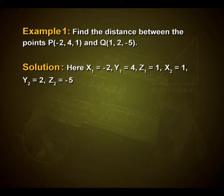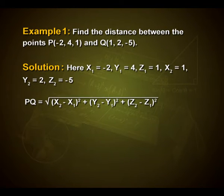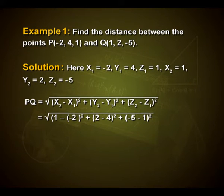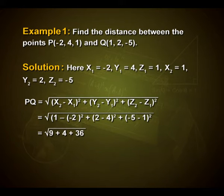On substituting in the distance formula, we have PQ = √[(x2−x1)² + (y2−y1)² + (z2−z1)²]. Substituting the values: √[(1−(−2))² + (2−4)² + (−5−1)²], which on simplification gives √(9 + 4 + 36) = √49 = 7 units.